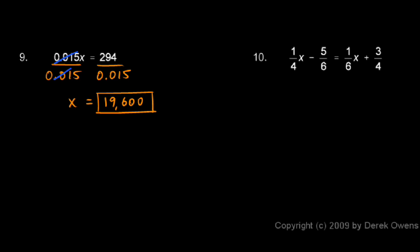You look at the denominators. Here we have a 4 and a 6 and a 6 and a 4. You think, what would be the least common denominator? In this case, it would be 12. You start off by taking both sides and multiplying it by 12.